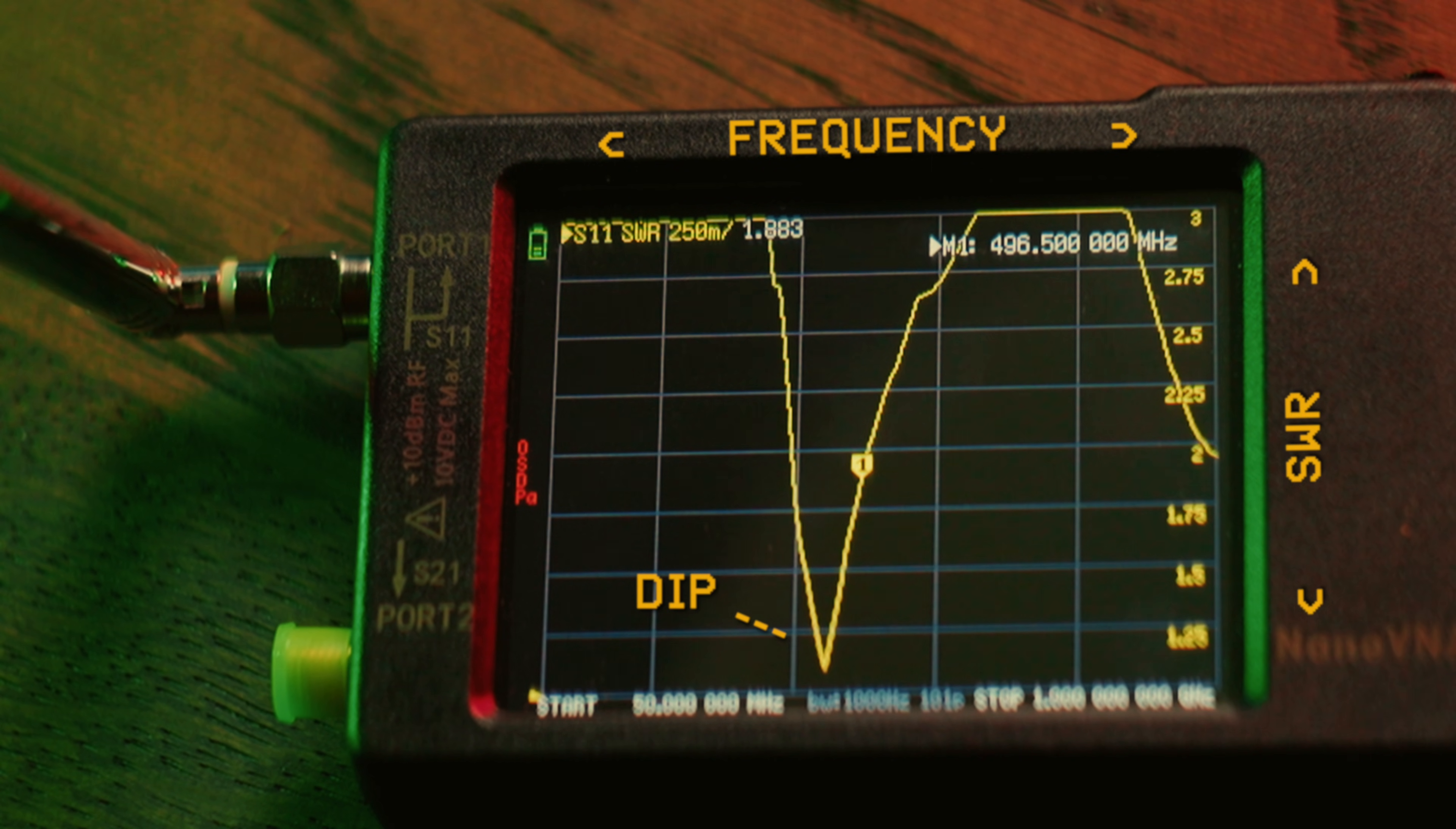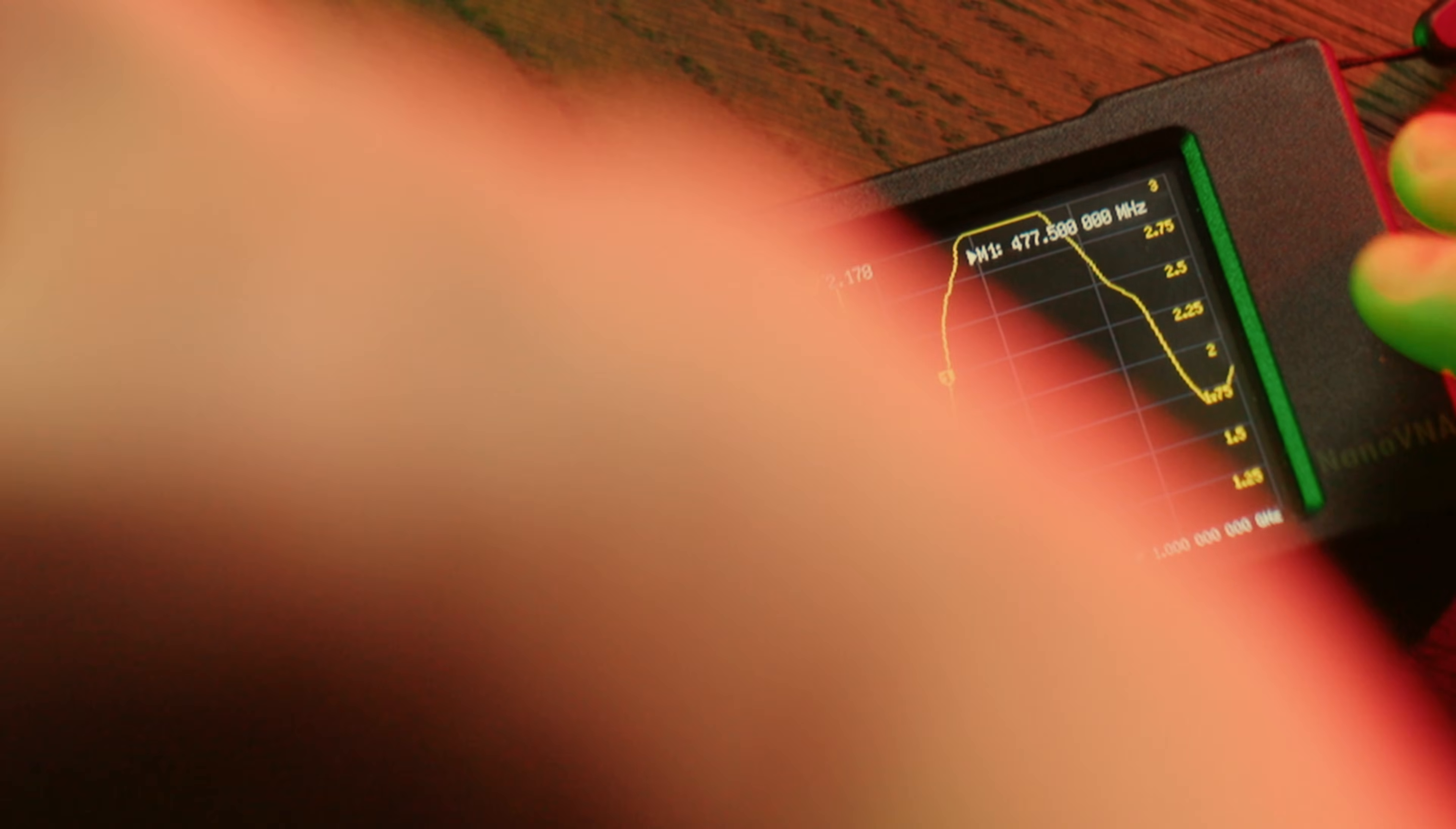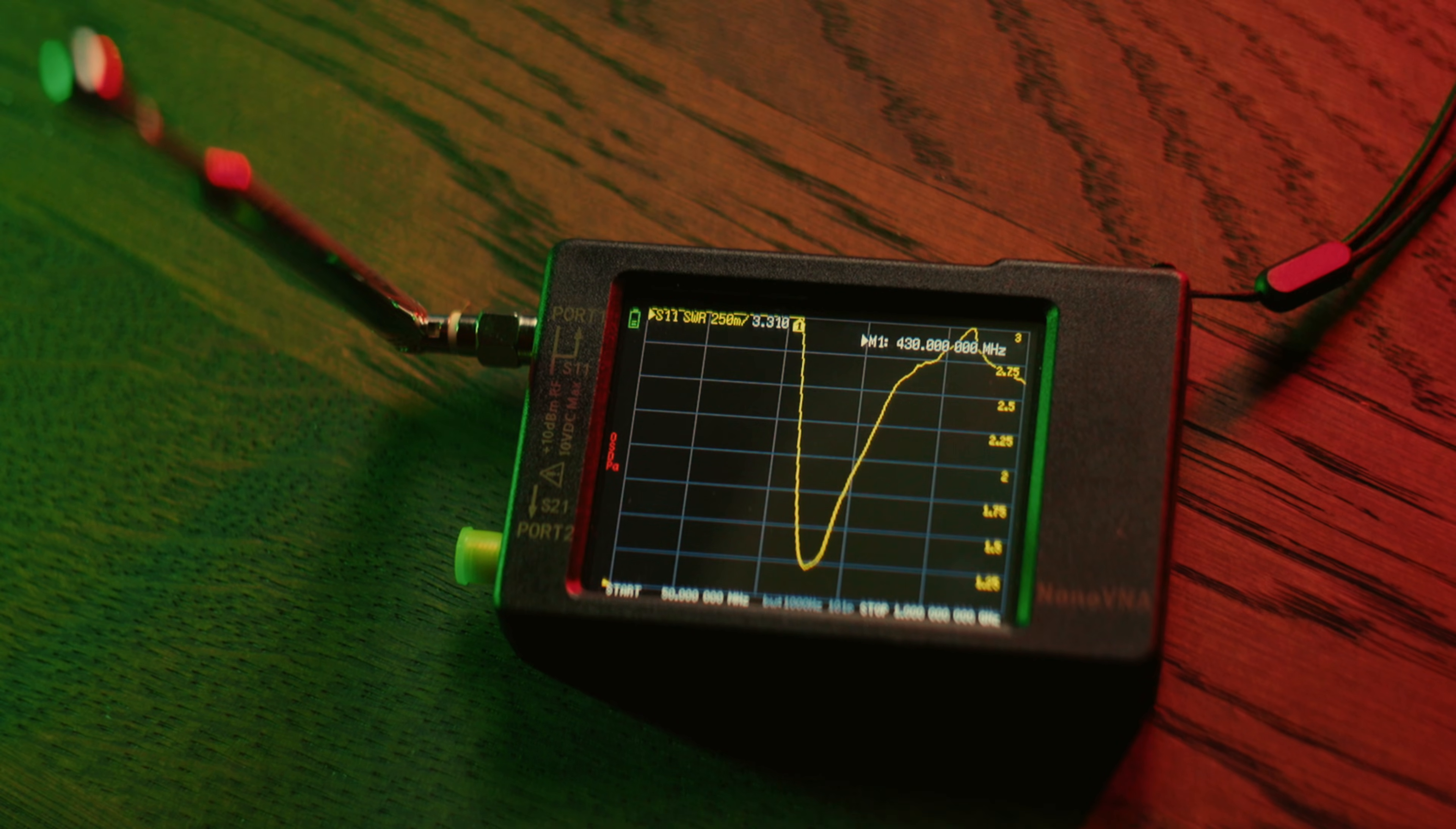We need an SWR between one and a half and two, preferably lower. If it is above three, it is really bad. When we adjust the length of the antenna that we are measuring, we can see that the dip of the SWR reading is changing. As we increase the length of the antenna, the dip goes down in frequency. And as we decrease the length of the antenna, the dip goes up in frequency. We can also see that simply touching the antenna or moving it near to other objects, especially metal ones, severely changes the resonance of the antenna. Be careful to never actually touch a transmitting antenna, as the voltages can be very high and cause arcing and skin burns.